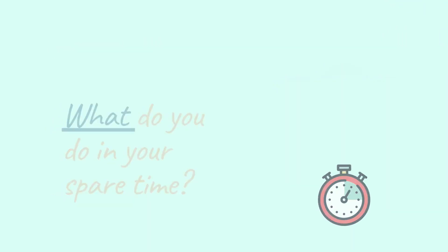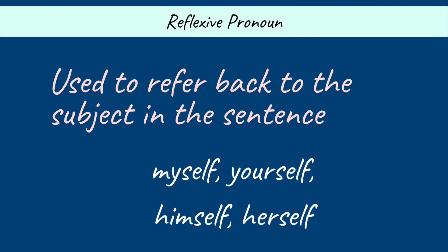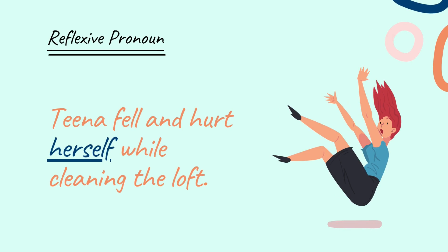Number seven: Reflexive pronoun. It is used to refer back to the subject in the sentence. Examples: myself, yourself, himself, herself. For example: 'Tina fell and hurt herself by cleaning the loft.' Here, the reflexive pronoun 'herself' is used to refer back to the subject Tina.